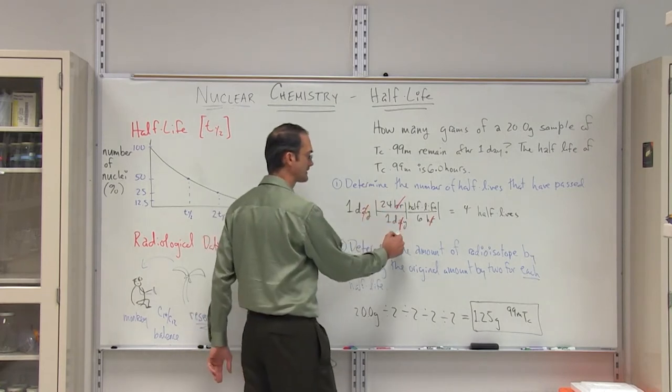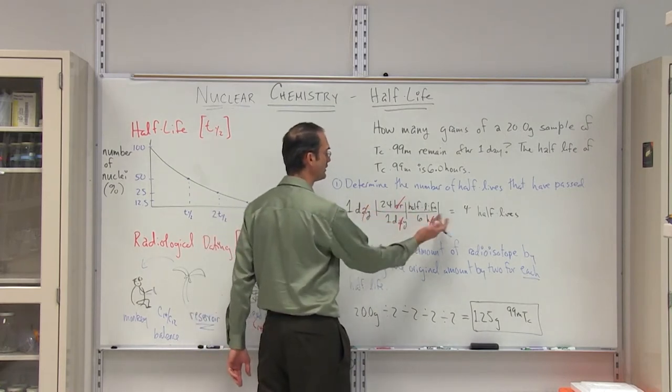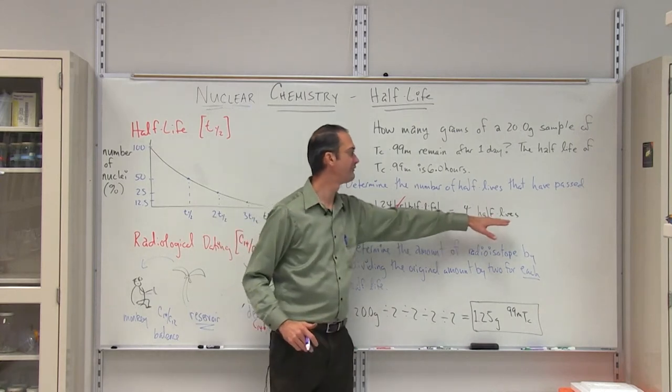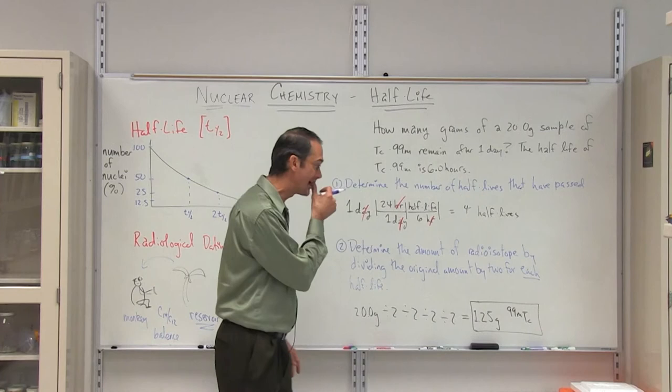I go day and day cancel, hour and hour cancel, and the only unit that remains is half-life. So I have 24 divided by six, which gives me four half-lives passed during every day.